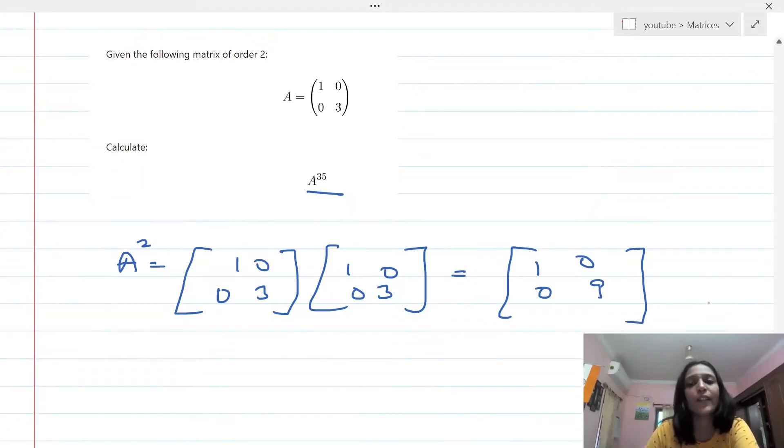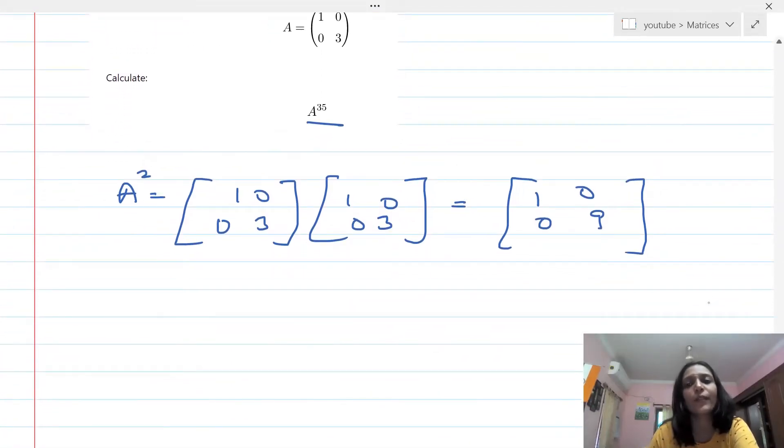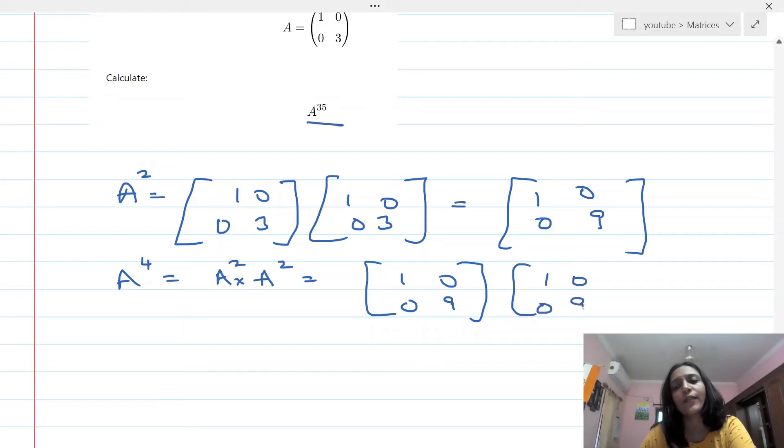So A squared we are getting as [1 0; 0 9]. Let's find out now what A to the power 4 would be, which is nothing but A squared times A squared. This is going to be [1 0; 0 9] times [1 0; 0 9].